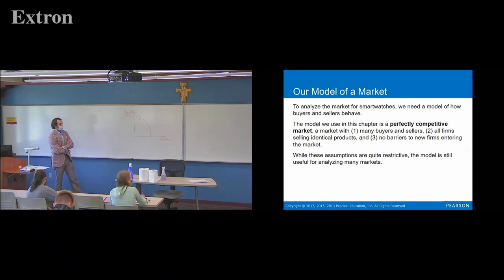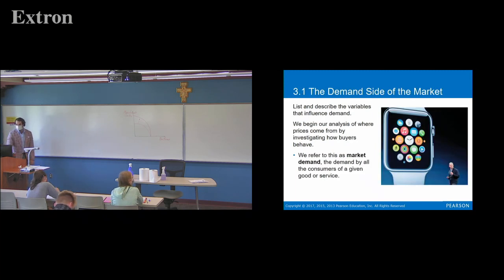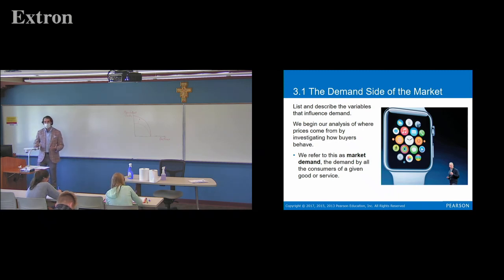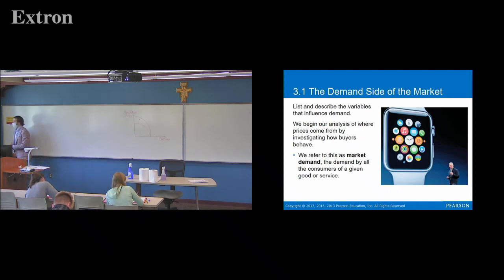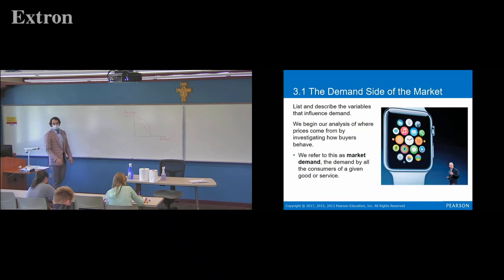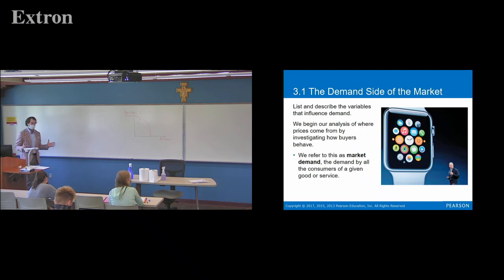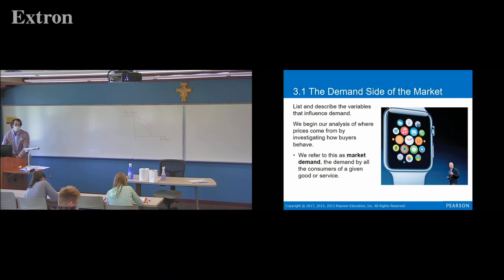First is the demand side — how buyers behave, how they react to price changes, and what that does to the amount of a good or service they want to buy. We refer to the total demand as market demand — that's all the consumers in a market. For a local restaurant, the market demand might just be the local area. For smartwatches, that's going to be across the whole world. Market demand is all the consumers for that good or service, however many there are and however spread out they are.